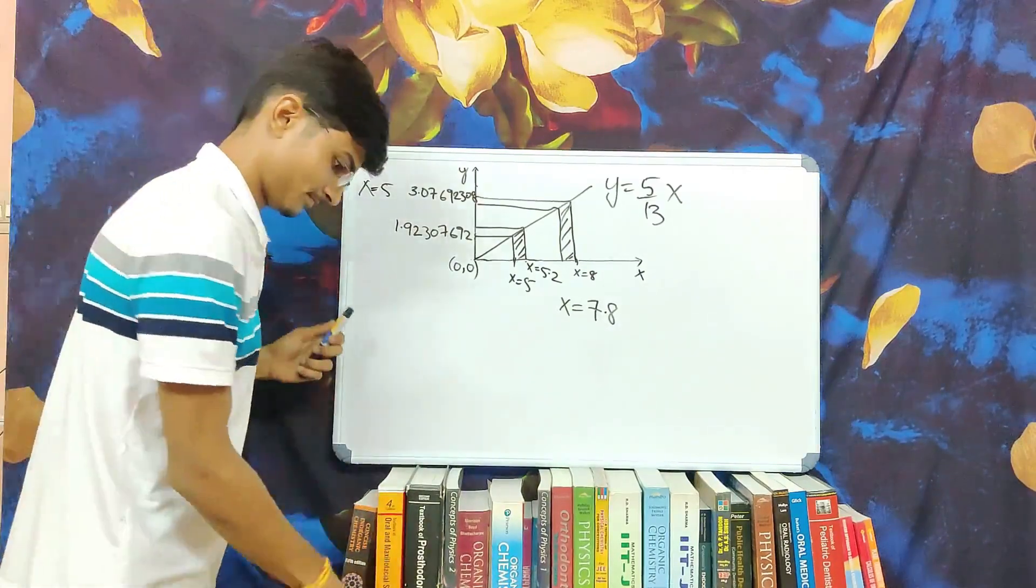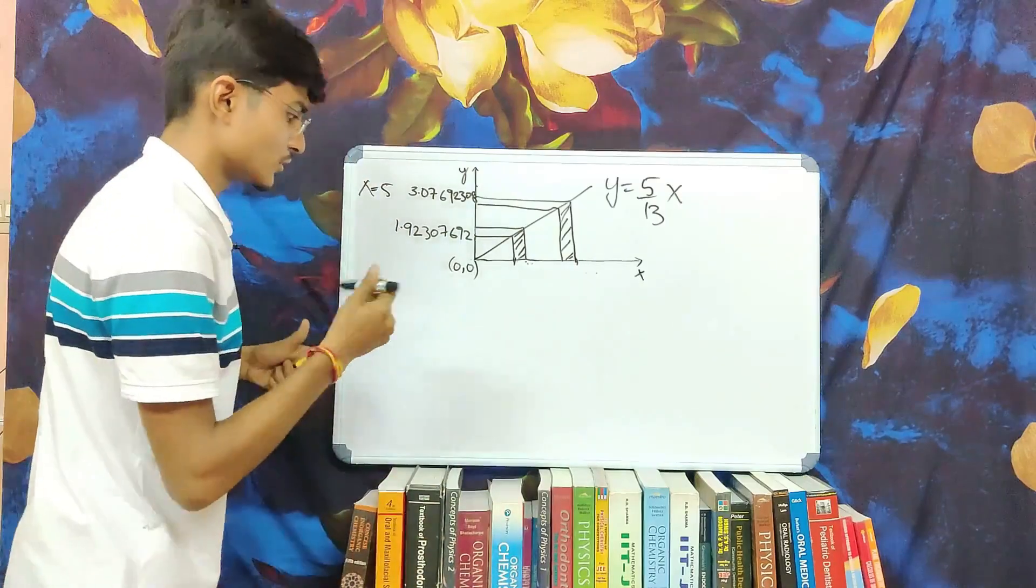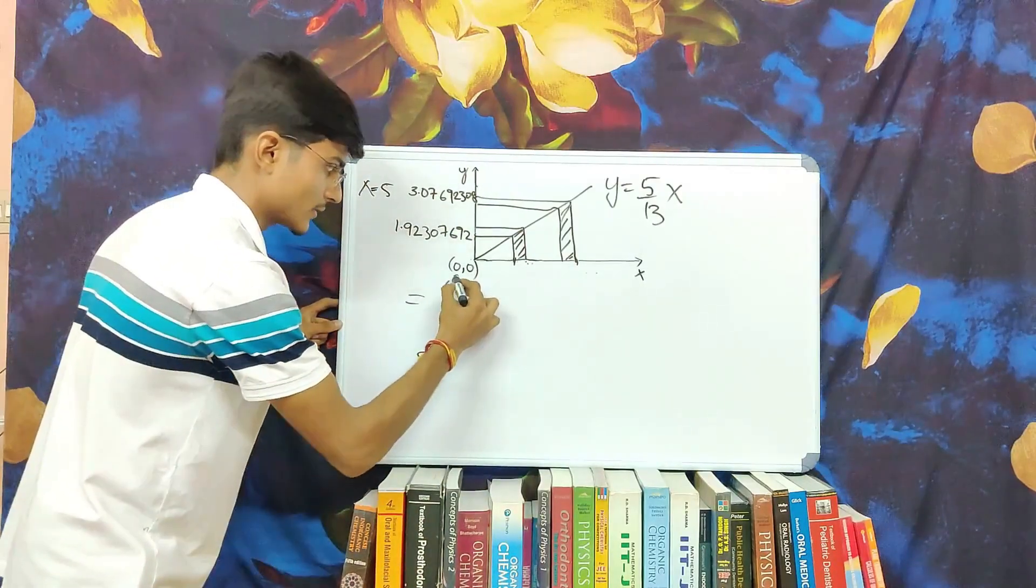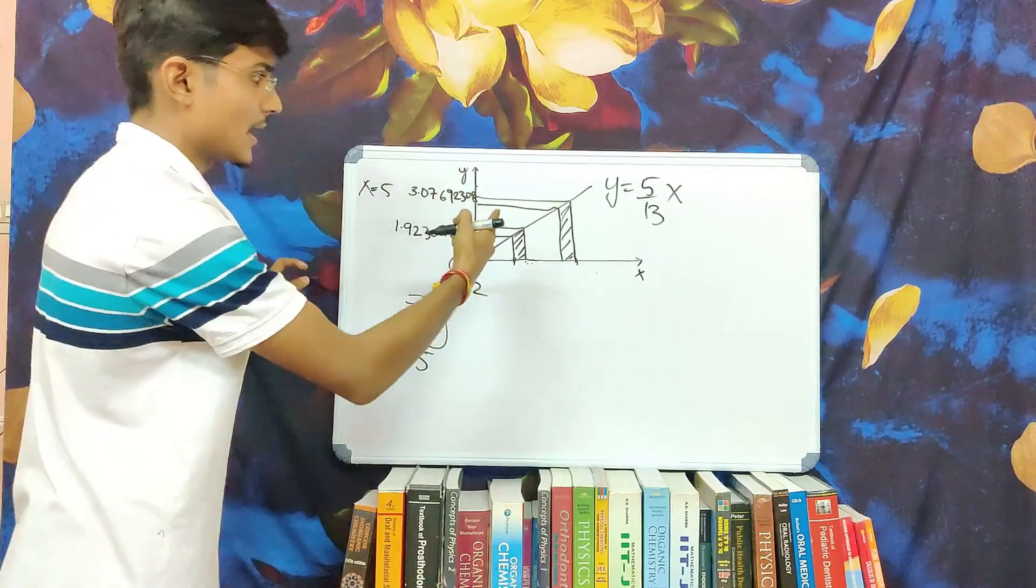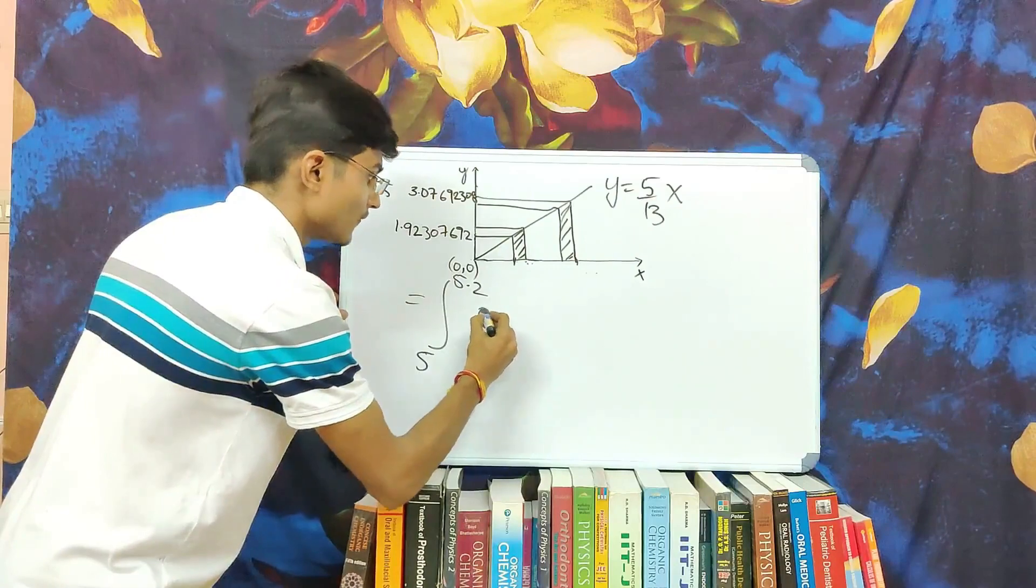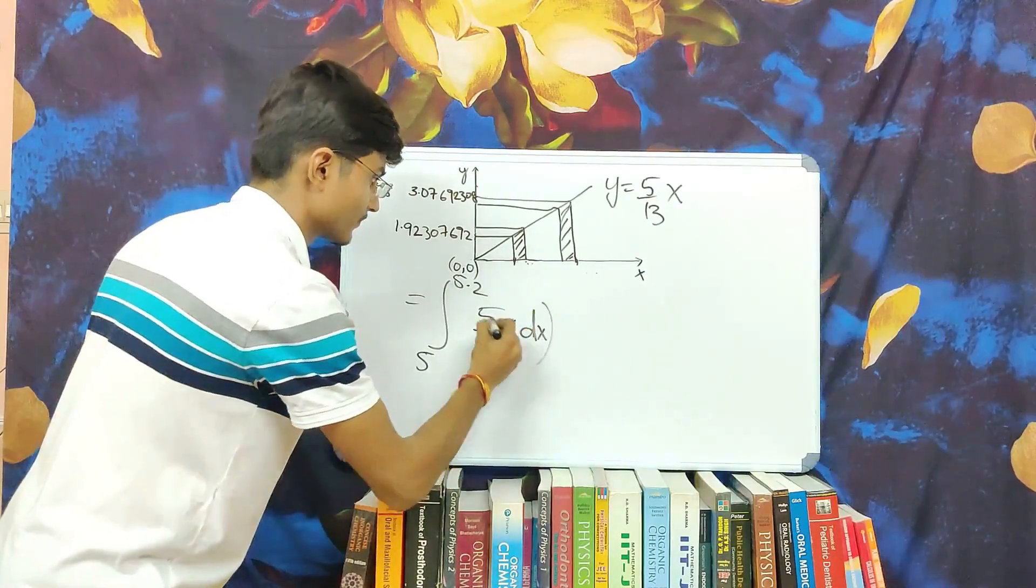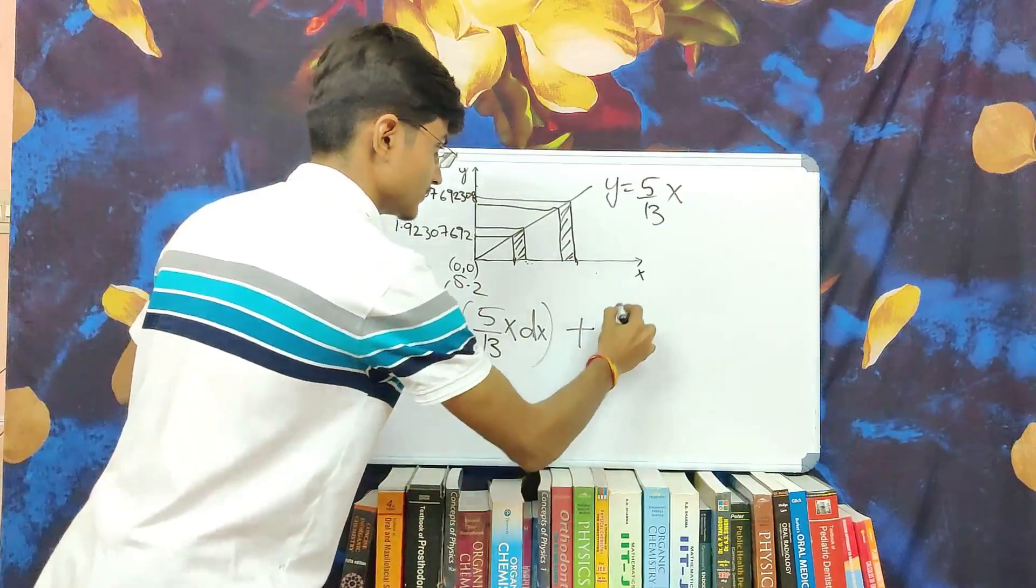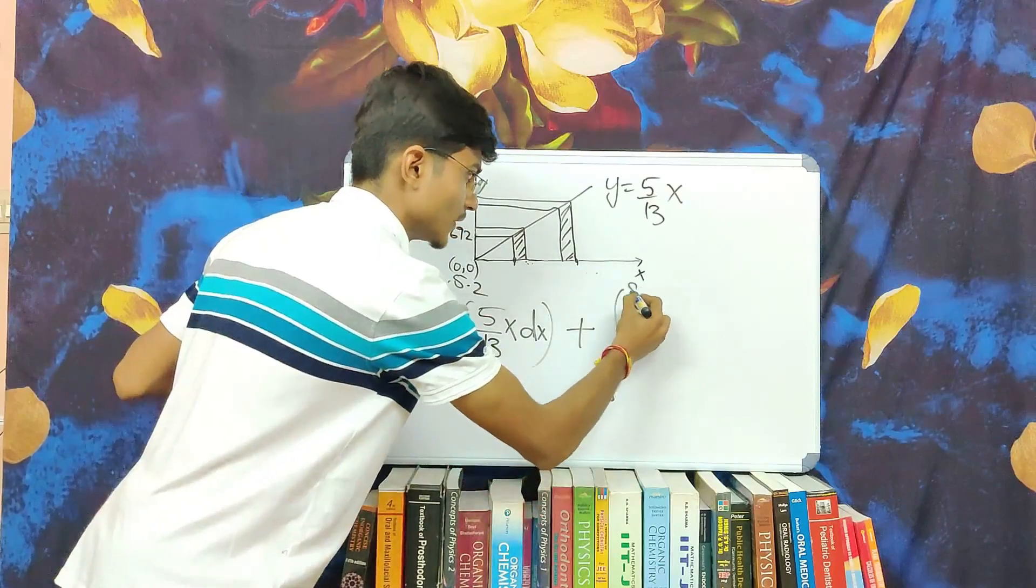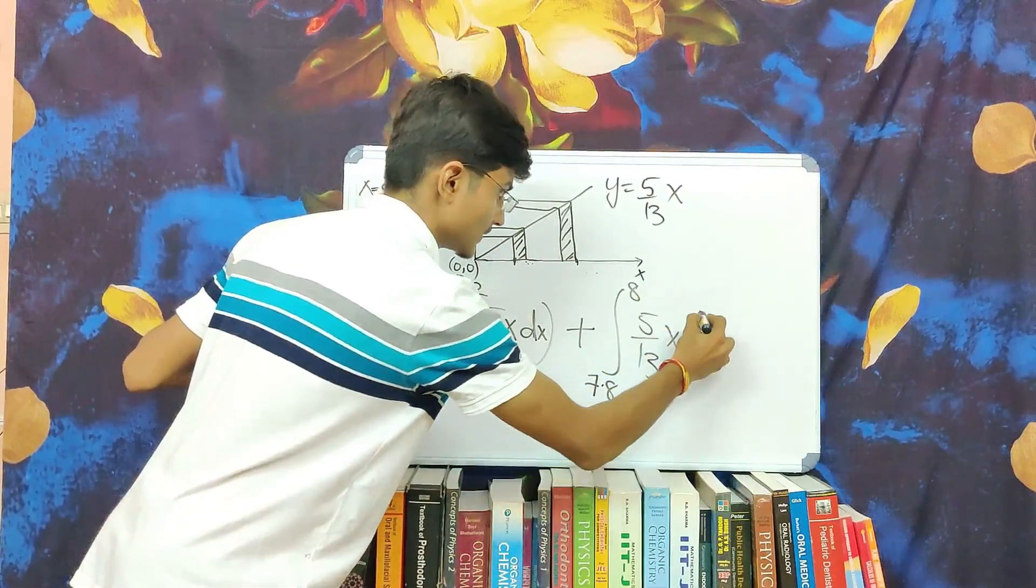Let's see upon integration. We will first do integration based on the limits x equal to 5 to x equal to 5.2, the integral is 5 by 13x dx plus from x equal to 7.8 to x equal to 8, 5 by 13x dx.